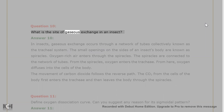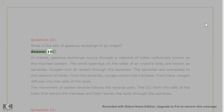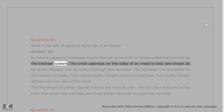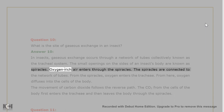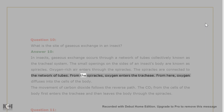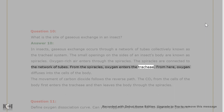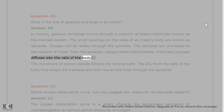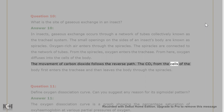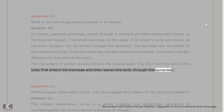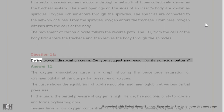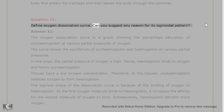Question 10: What is the site of gaseous exchange in an insect? Answer 10: In insects, gaseous exchange occurs through a network of tubes collectively known as the tracheal system. The small openings on the sides of an insect's body are known as spiracles. Oxygen-rich air enters through the spiracles, which are connected to the network of tubes. Oxygen diffuses from the trachea into the cells of the body, while carbon dioxide from the cells first enters the trachea and then leaves through the spiracles.